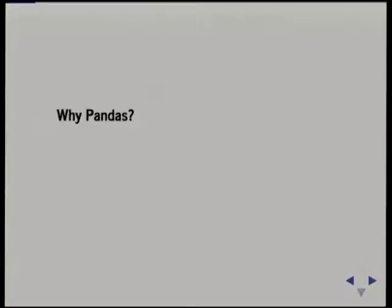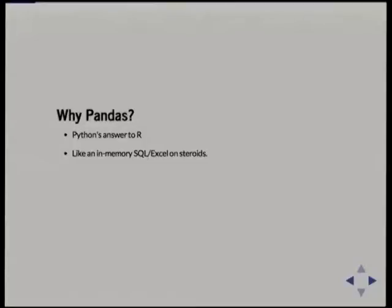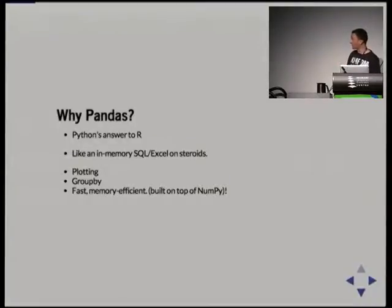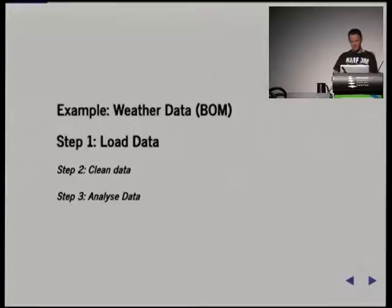Why should we be using pandas? Pandas is really Python's answer to R — they're very similar, very high performance. The way to think of it is it's an in-memory SQL or Excel on steroids. It's got stacks of useful features, it's really easy to do plotting, really flexible group-wise operations, and it's built on top of NumPy so it's very fast and memory efficient — a lot of the time you're calling out to Cython code.